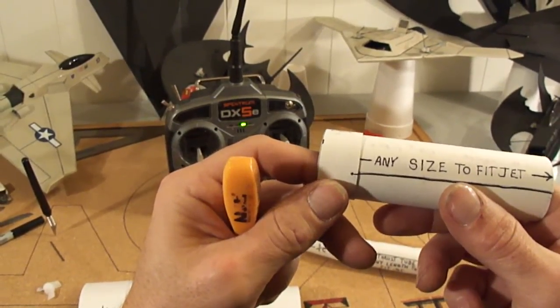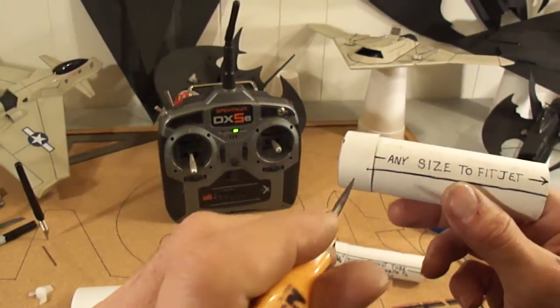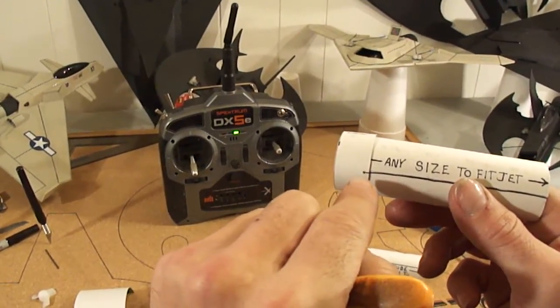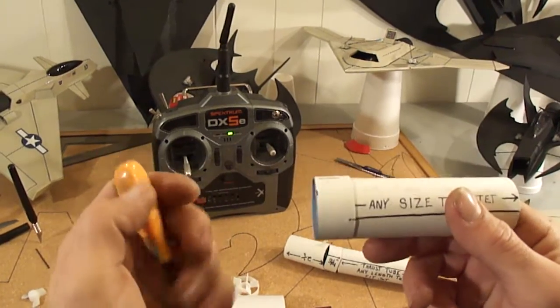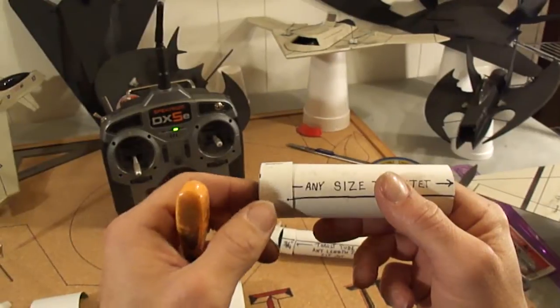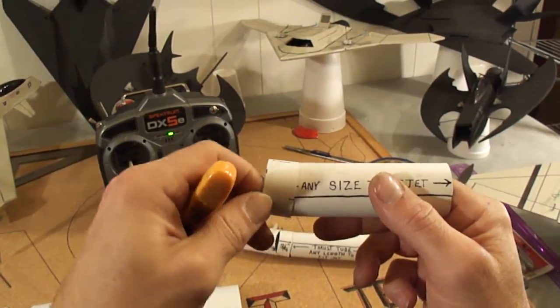And punch your hole. Drive your carbon fiber rod through there. Run it out the other side. Make sure it's centered. That's going to give you your up and down movement.